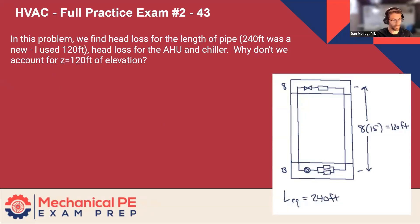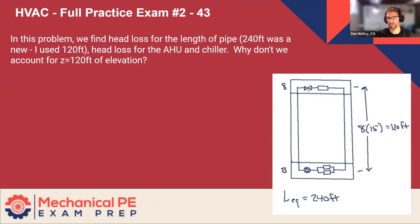Okay, exam two, number 43. This one was about an AHU and a core riser. We've got a pump, a couple of chillers, an air handling unit, and a control valve that has to get through. We know the height of the building. We know this thing's in the basement. There's eight floors. In this problem, we find head loss for the length of pipe — 240 feet.